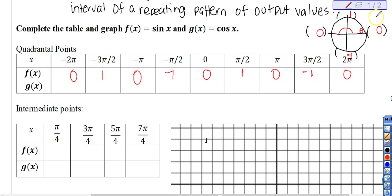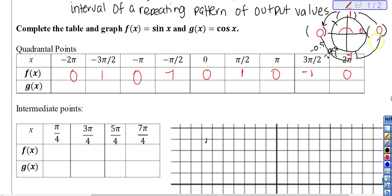Let's talk about what's happening in between these quadrantal values. The values between zero and pi over 2 have to fit on the number line between zero and one, and as we head back down they go between one and zero. So you get values like 0.5, 0.75, 0.2, 0.001. Then they head from zero down to negative one — values like negative 0.5 and negative 0.999. You top out at positive one and bottom out at negative one, with all other values in between.